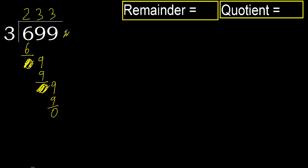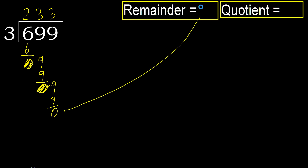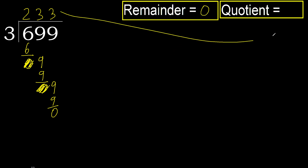Next. There is no more number, therefore finish it. Therefore 699 divided by 3 is 233.